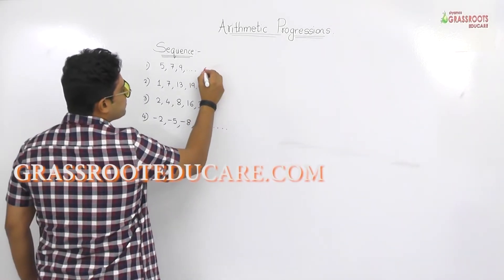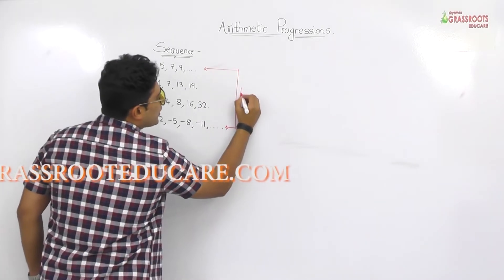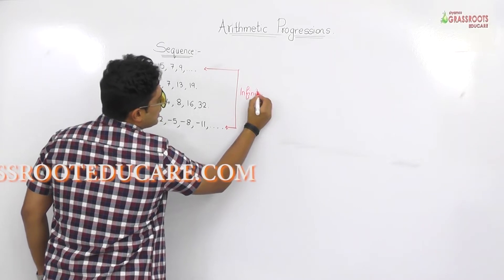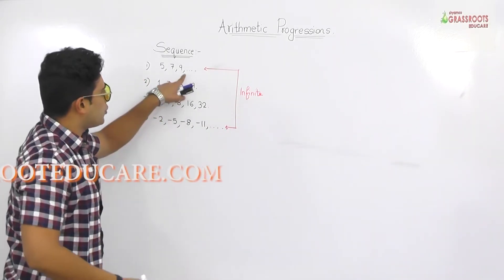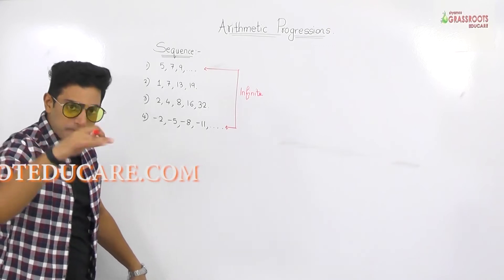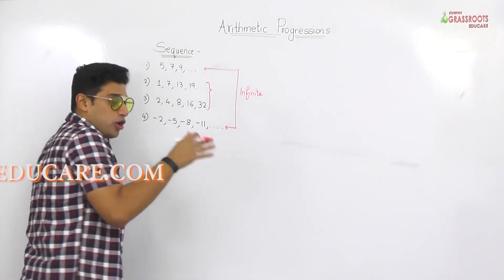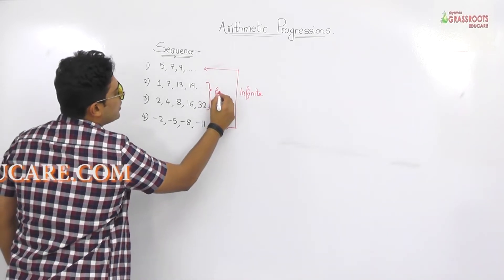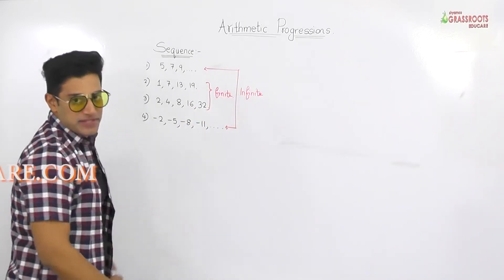The first and last sequences are called infinite sequences — they obviously never end, with dots continuing. The second and third, which end and terminate, are called finite sequences.